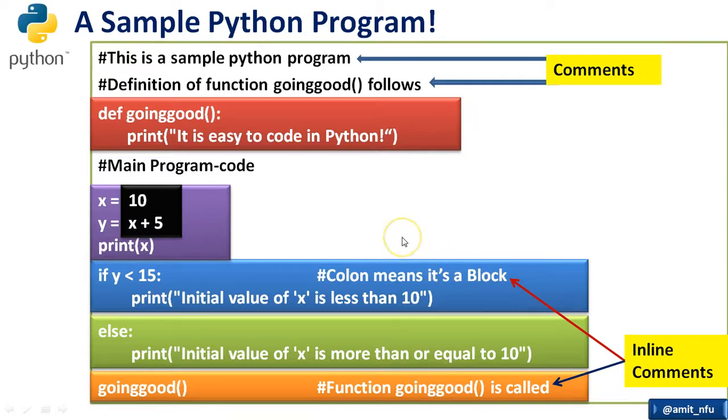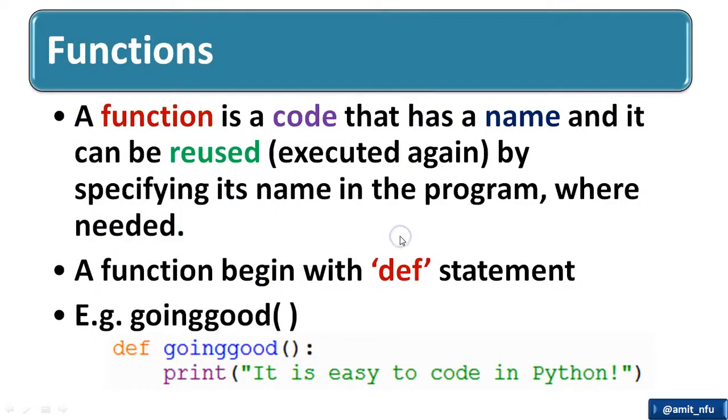So they are basically comment statements, they are non-executable ones. Next is the function. Function is a code that has a name and it can be reused, which means executed again by specifying its name in the program where it is required. A function begins with DEF, definition statement. DEF is a keyword, definition.